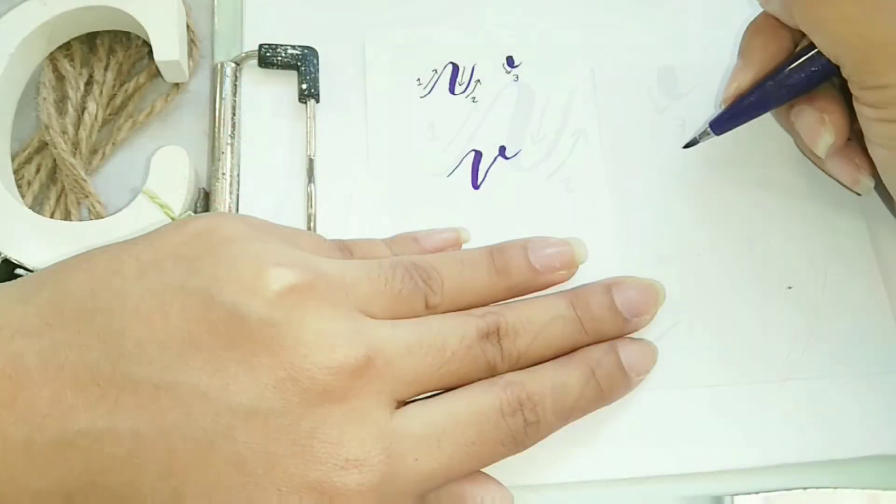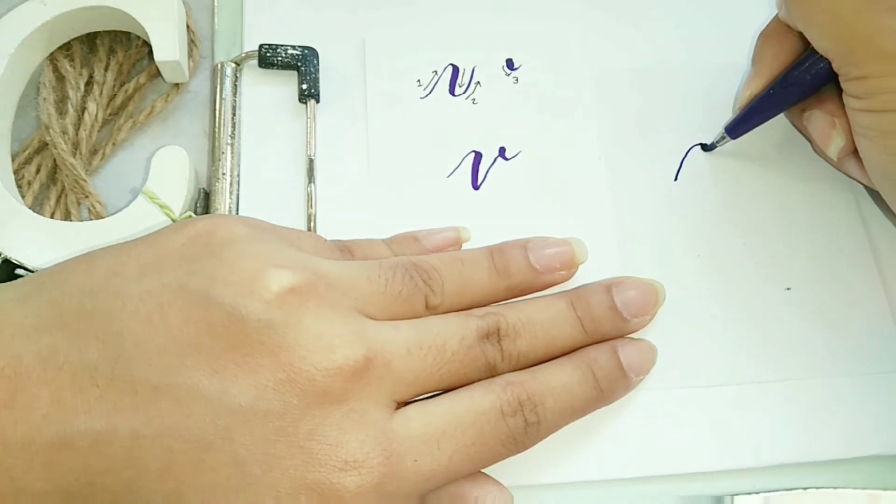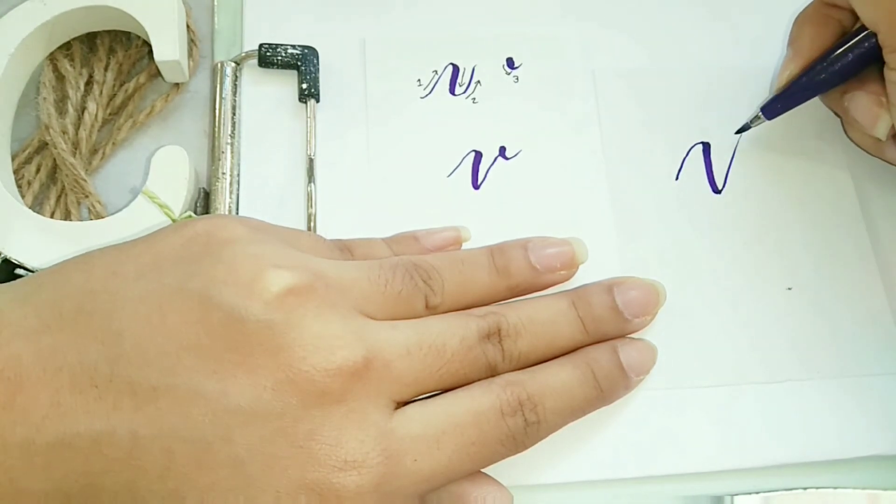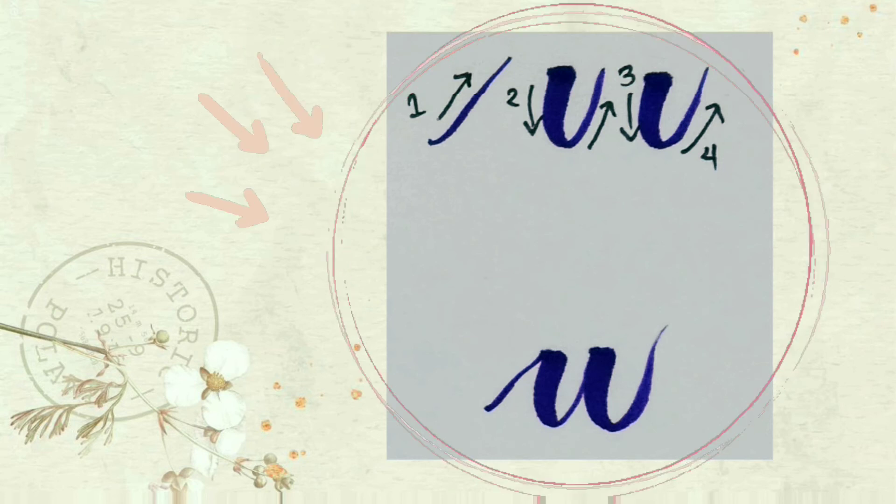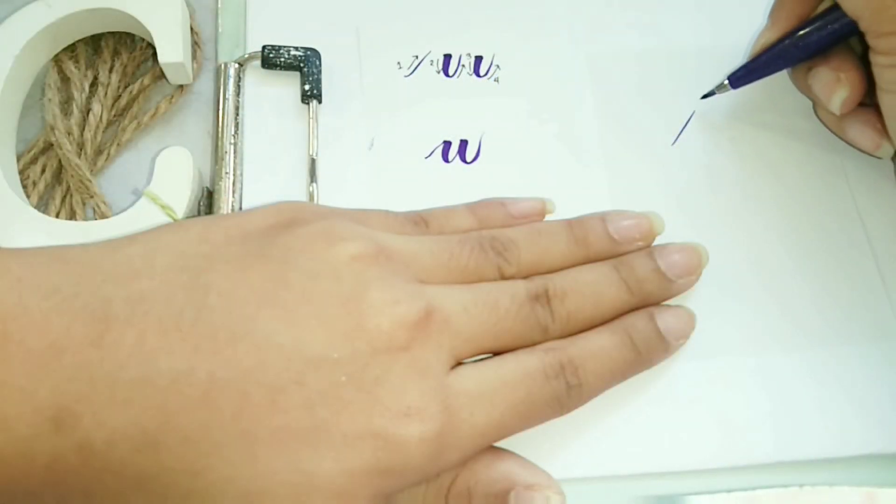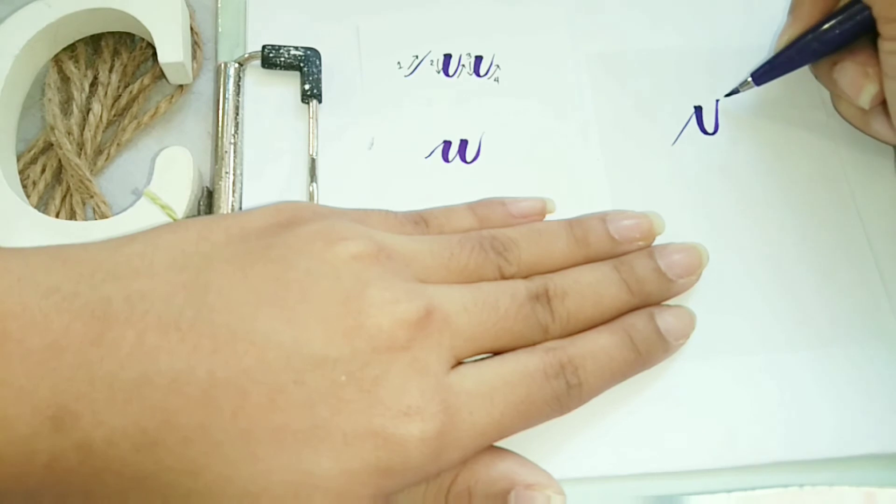So letter V, entrance stroke, tapos undertone stroke, tapos undertone stroke, like that.